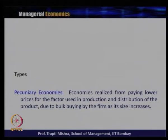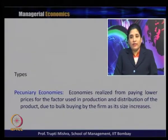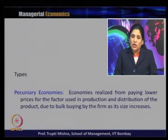There are two types of economies of scale. First is pecuniary economies of scale, which are realized from paying lower prices for factors used in production and distribution due to bulk buying as firm size increases. This is about paying a lower input price — not using less quantity of input, but paying less for it.